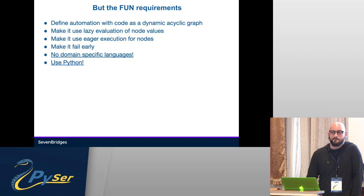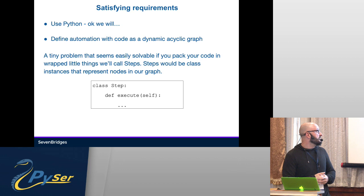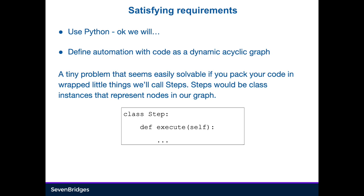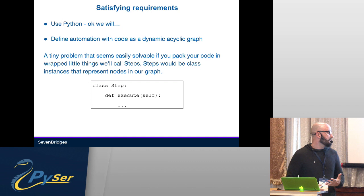So we decided to go step by step. If they want Python, we'll use Python. We needed to create a dynamic acyclic graph, which would be a class that represents the node. We call that class a Step, and it has its own execute function which defines what's going to happen inside of that step or that node.